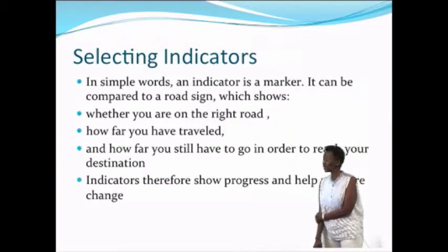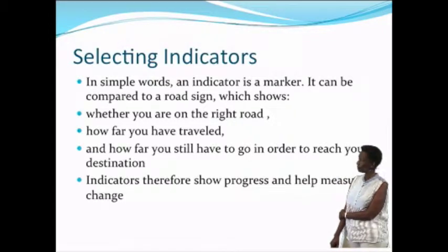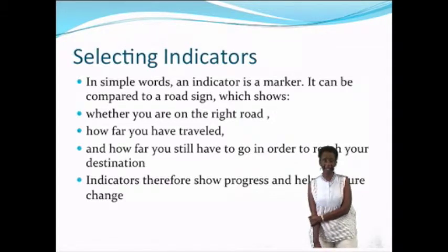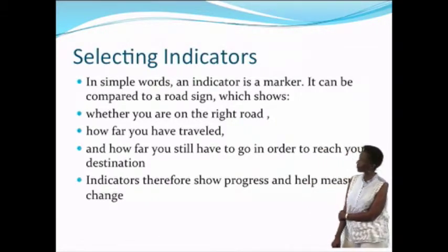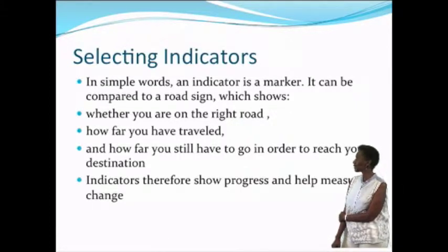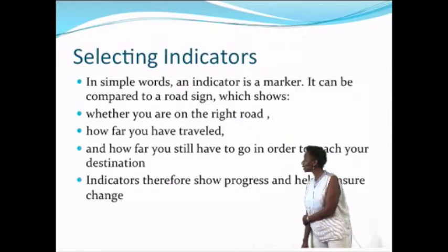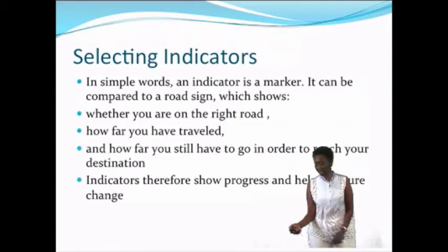In a simple way, an indicator is a marker — it can be compared to a road sign, which shows whether you are on the right road and how far you have traveled. If you are going to Johannesburg and you need to cover 200 kilometers, the sign shows you that you have traveled 150 and have 50 left, and how far you still have to go to reach your destination. Indicators therefore show the progress and help to measure the change.